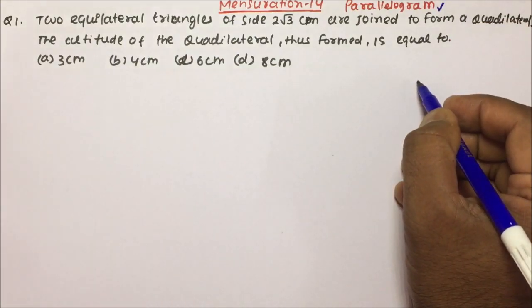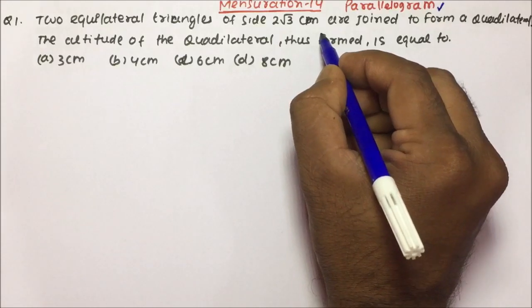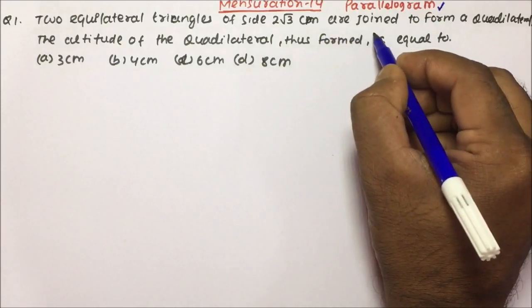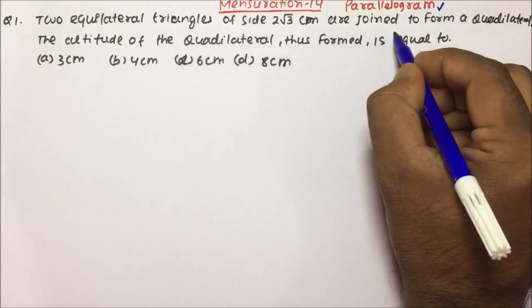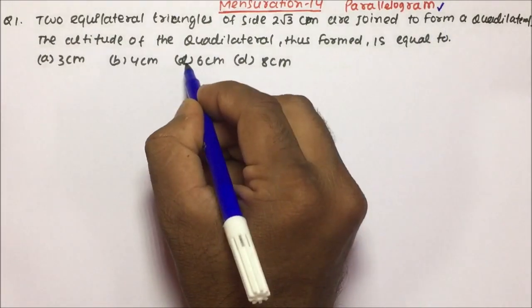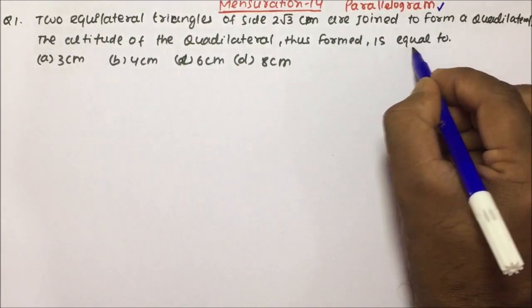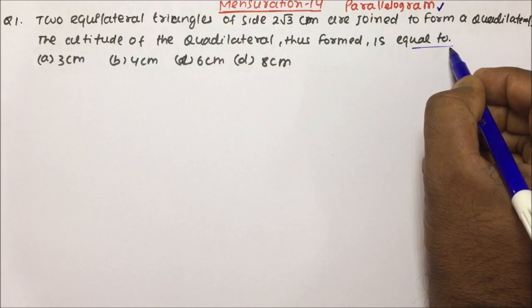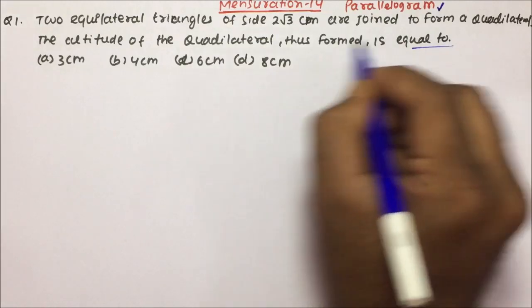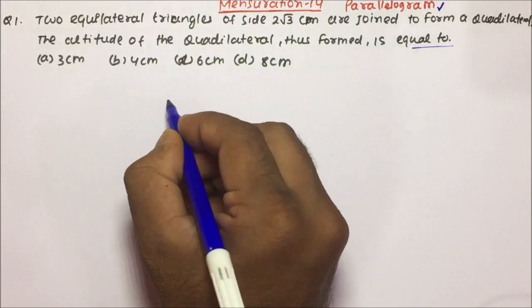Now let us see what the question is. Two equilateral triangles of sides 2√3 centimeters are joined to form a quadrilateral. The altitude of the quadrilateral thus formed is equal to — so you have to calculate the altitude, or you can say the height, of the quadrilateral formed. Let us see how we can draw the diagram.